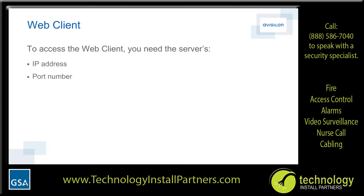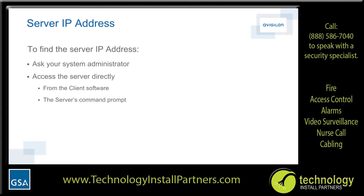To access the web client, you need to know the IP address and port number of the server you want to connect to. To find the server's IP address, you can ask your system administrator, or you can access the server directly. To access the server to find the IP address, you can do so either using the client software or through the server's command prompt.